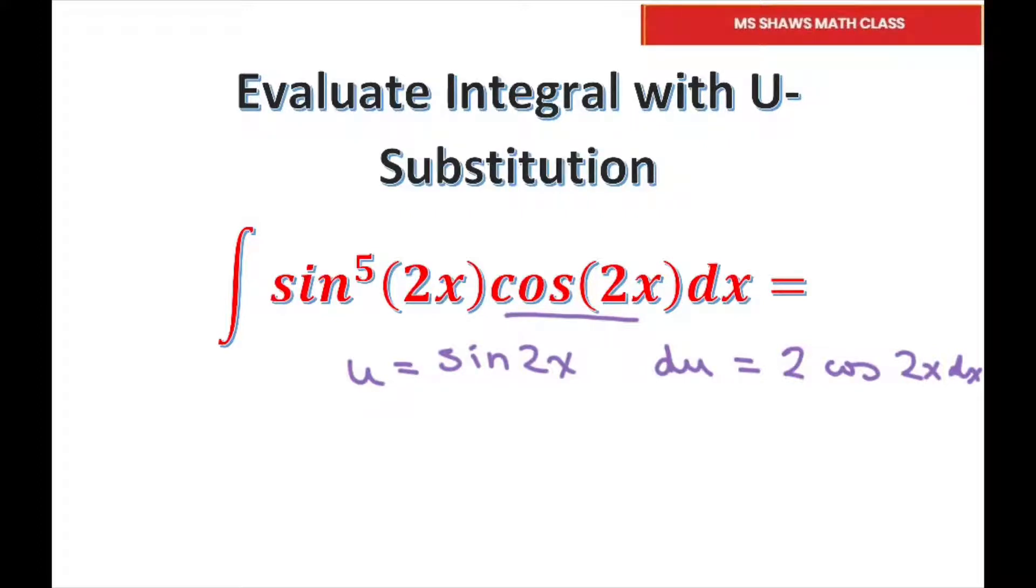Then you can rewrite this as, because I'm just differentiating this, you can write this as 1 half, if I multiply it through, du equals cosine 2x dx. And the reason I want to write this is so I can substitute right in here.